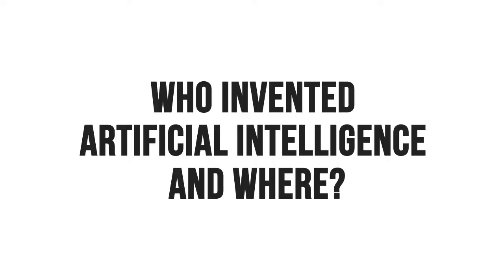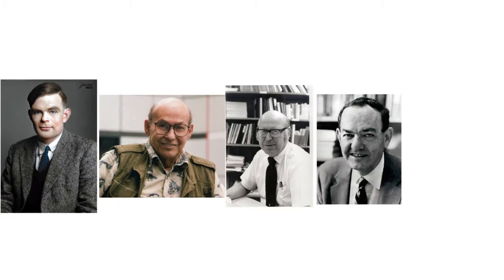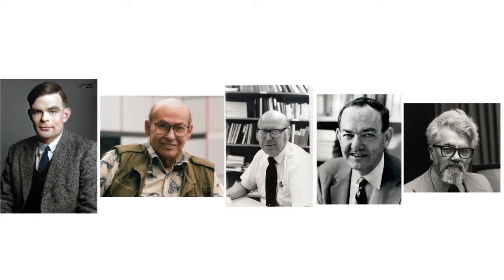Who invented artificial intelligence and where? The ideas about artificial intelligence evolved through centuries, starting with Greek myths about intelligent robots. But AI as we know it today only emerged in 1955. The term was coined by Alan Turing, Marvin Minsky, Alan Newell, Herbert Simon, and John McCarthy.